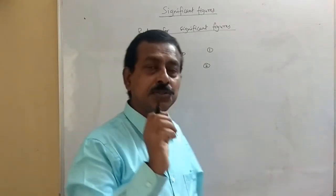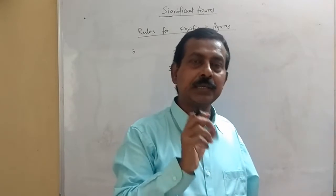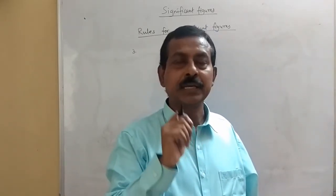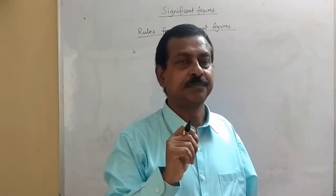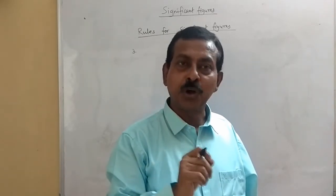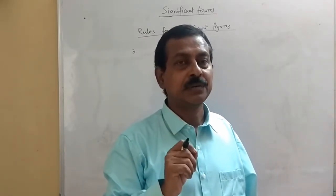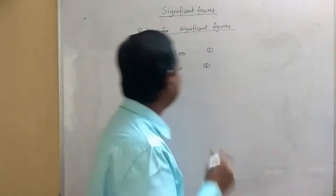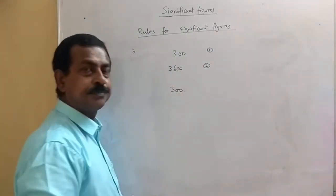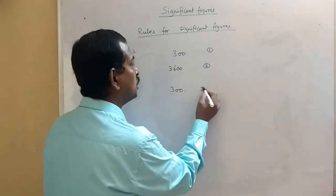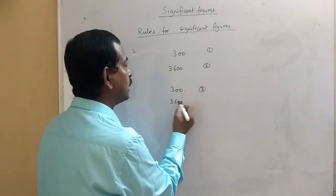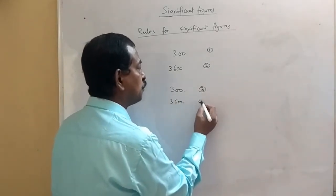However, if zeros appear at the end of the number followed by a represented decimal point, then they are significant. For example, if it is written as 300. (with a decimal point), then the number of significant figures will be 3. If it is 3600. (with a decimal), then it is 4.